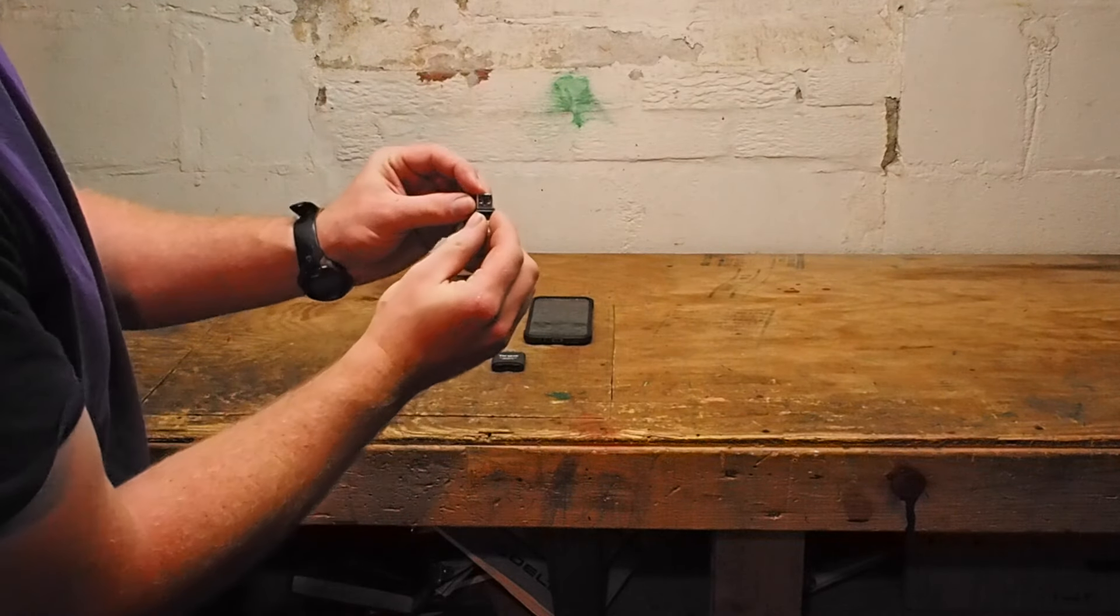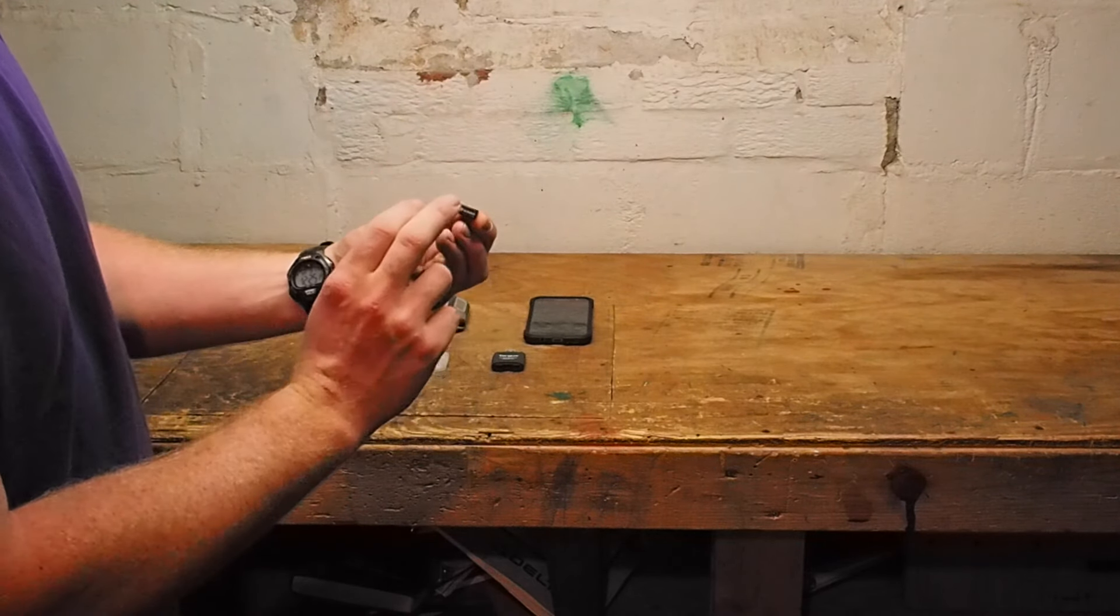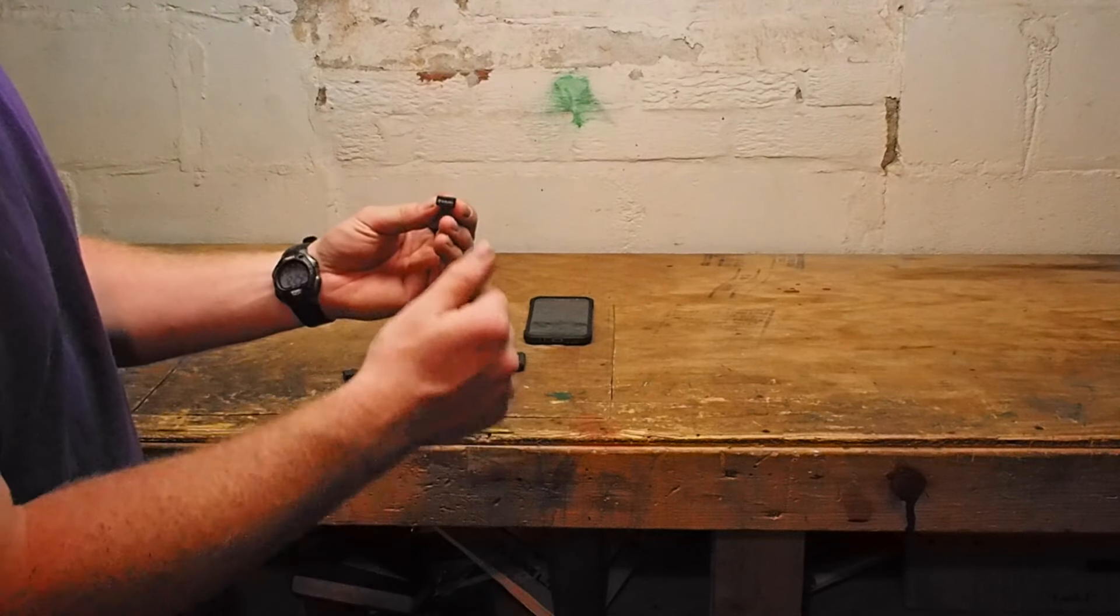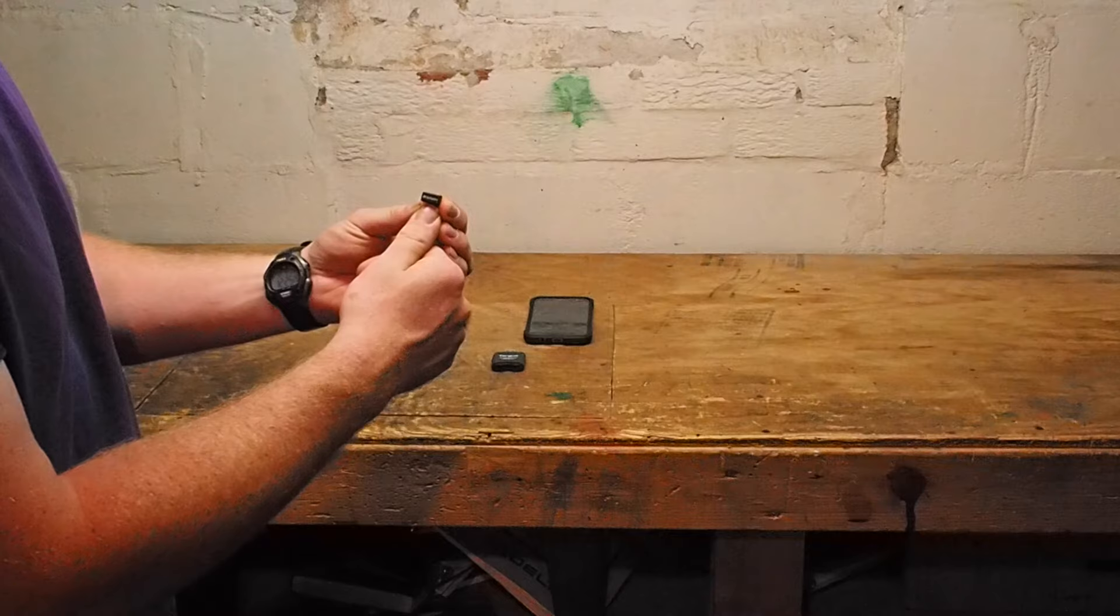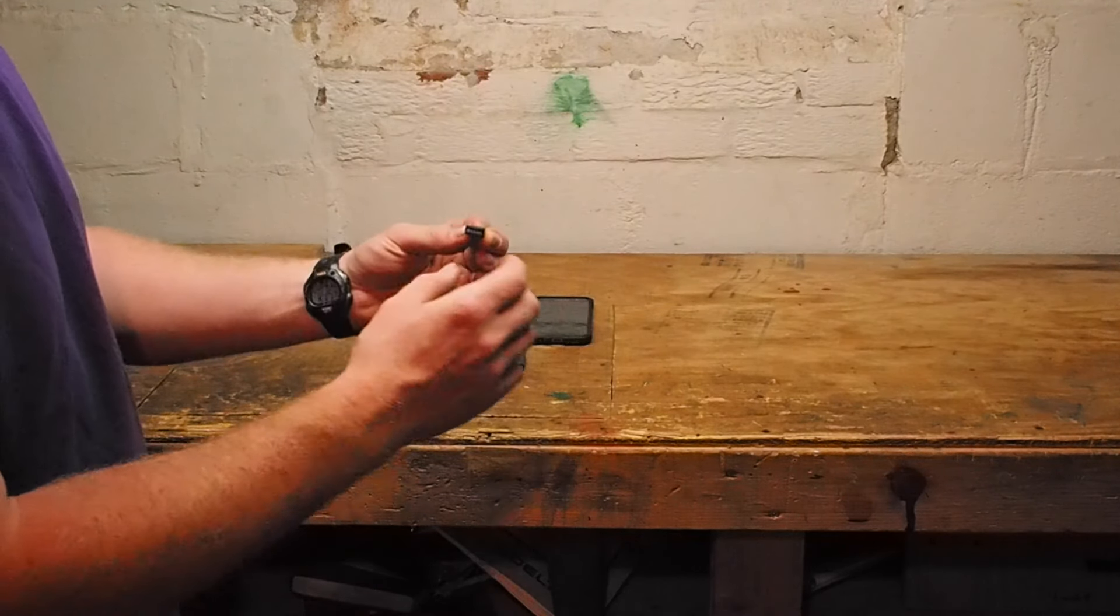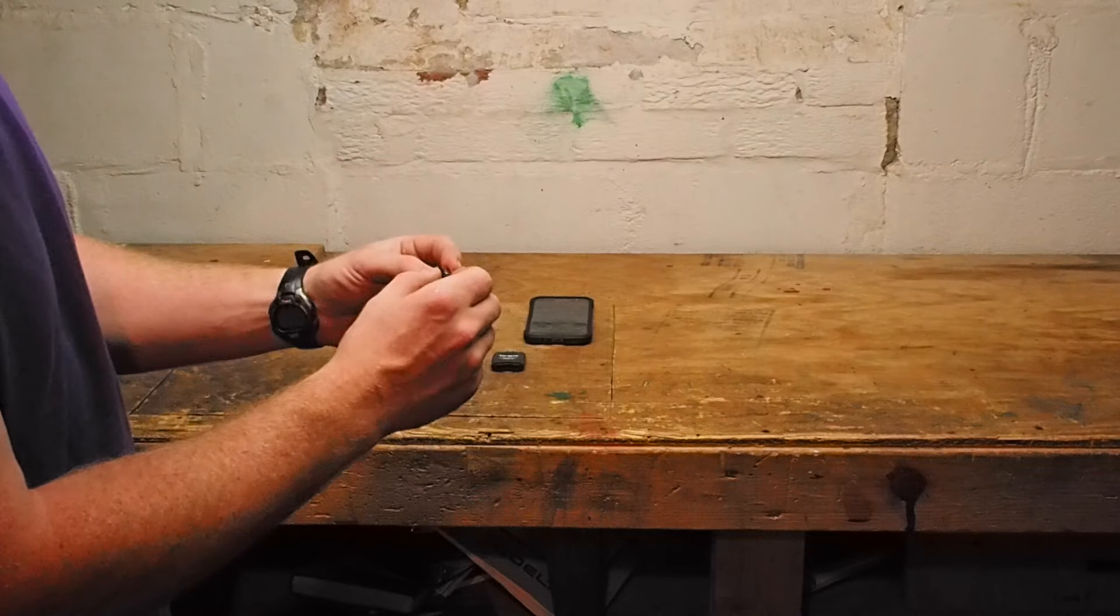This little thumb drive is 16 gigabytes. That means I can put an entire map set for a long trail on there, plus back up my pictures, plus have audio books and a music library, plus have books, ebooks, anything. I can have PDFs on here for any sort of situation.